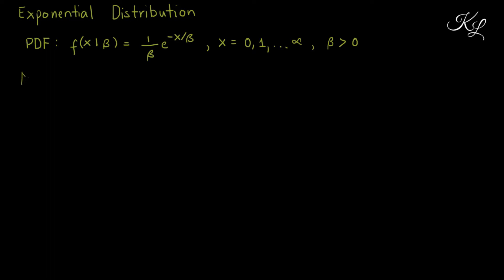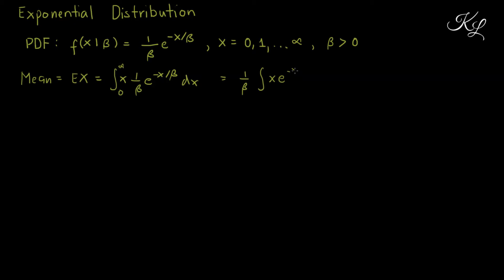Let's now derive the mean. The mean is equal to the expectation of x, and expectation of x is the integral from 0 to infinity of x times the probability density function dx. Let's move out the constant from the integration. Now let's integrate this using integration by parts. Remember the formula: the integral of U dV is equal to UV minus the integral of V dU.